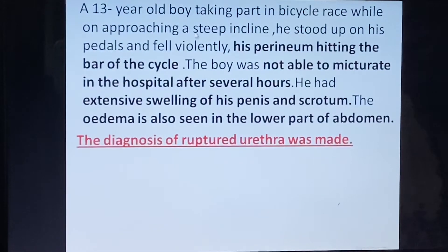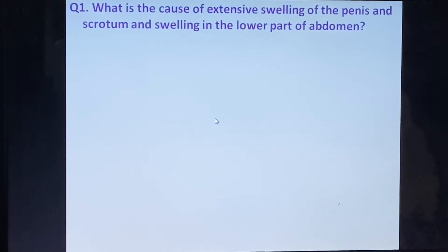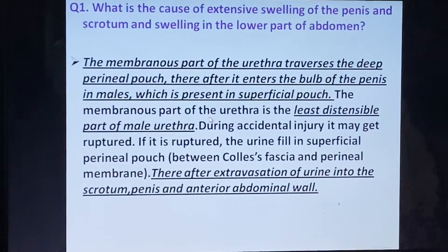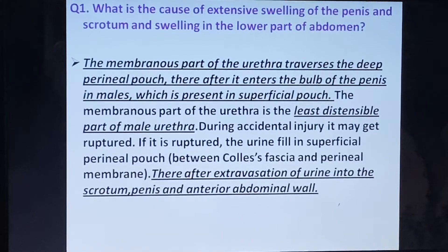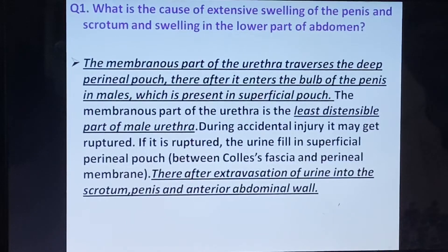Returning to the clinical case of the ruptured urethra: The membranous part of the urethra traverses the deep perineal pouch and then enters the bulb of the penis in the superficial pouch. The membranous urethra is the least distensible part of the male urethra. During accidental injury it may rupture, causing urine to fill the superficial perineal pouch — between Colles' fascia and the perineal membrane — with subsequent extravasation into the scrotum, penis, and anterior abdominal wall, because the superficial perineal pouch is open anteriorly.